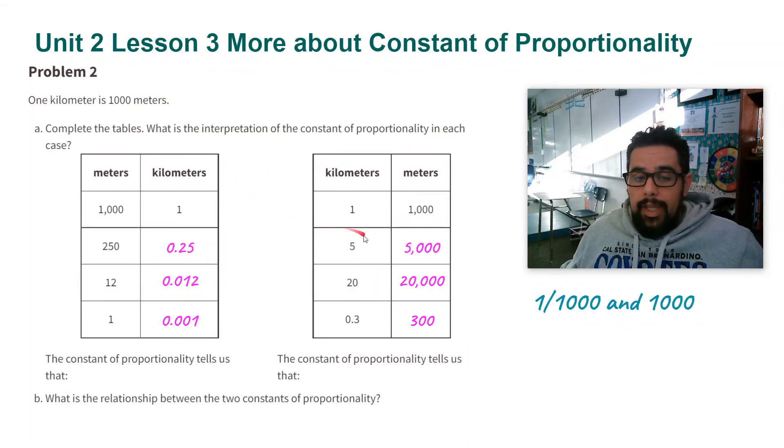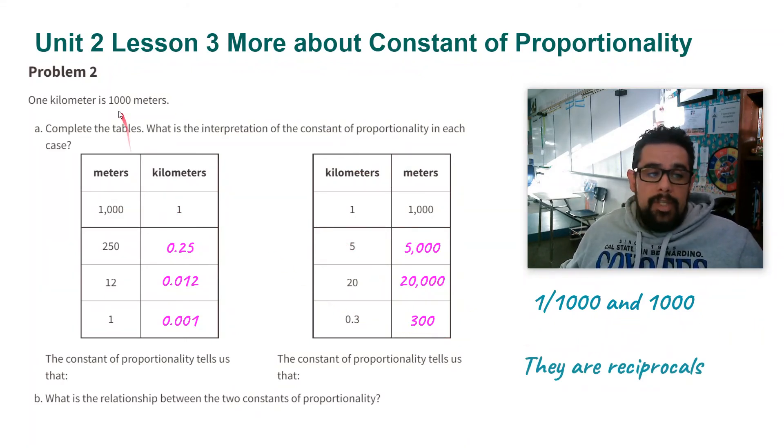Now how are these two related? They are reciprocals - the same thing being flipped over. And it makes sense, right? You have 1 kilometer is 1,000 meters. To fill this table in, we divided by 1,000 or multiplied by 1/1000. To find the numbers in this table, we multiplied by 1,000.